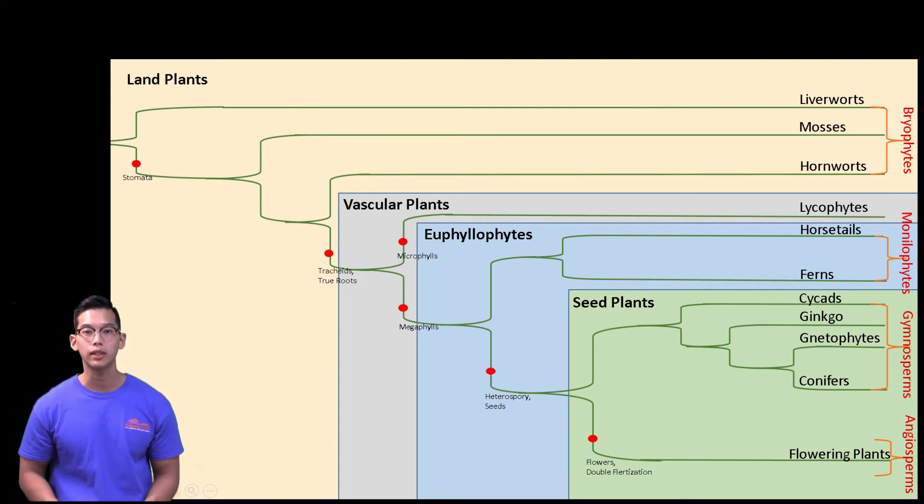Based on the phylogenetic tree that we just created, which of the following groups would you consider to be a clade? Our land plants, our bryophytes, monilophytes, gymnosperms, angiosperms, vascular plants, euphyllophytes, or seed plants. Take a moment to pause the video and write down which groups are and are not a clade.